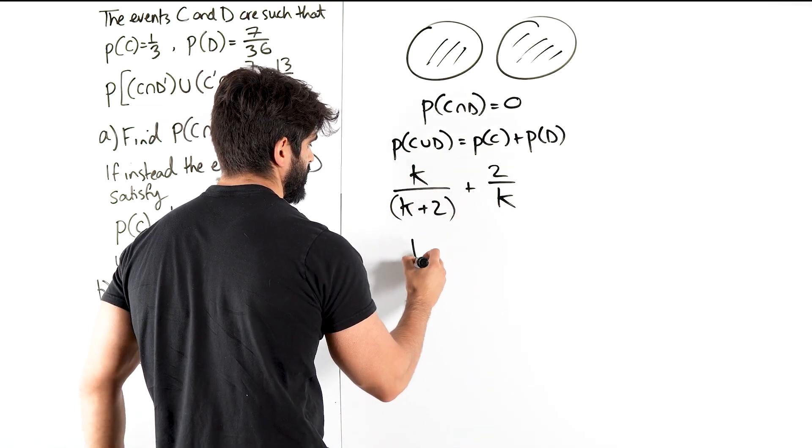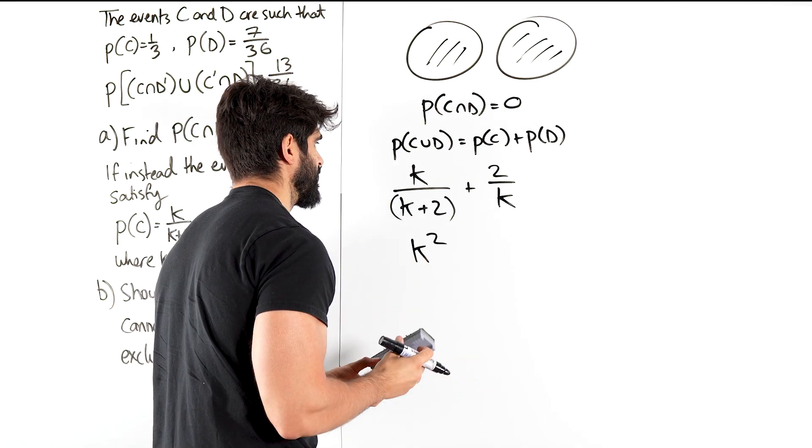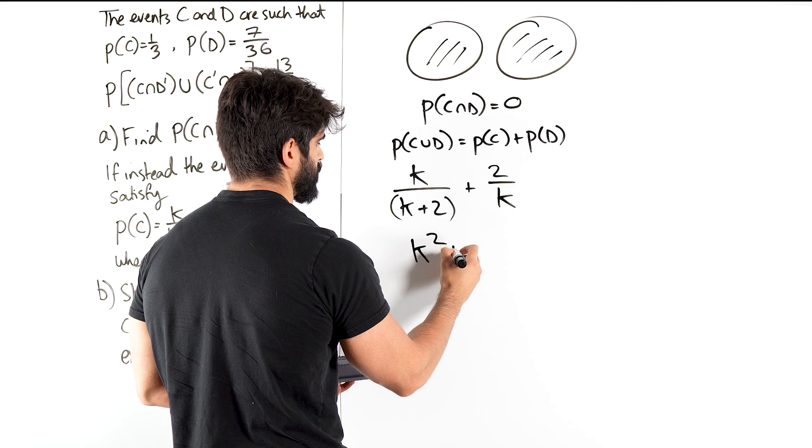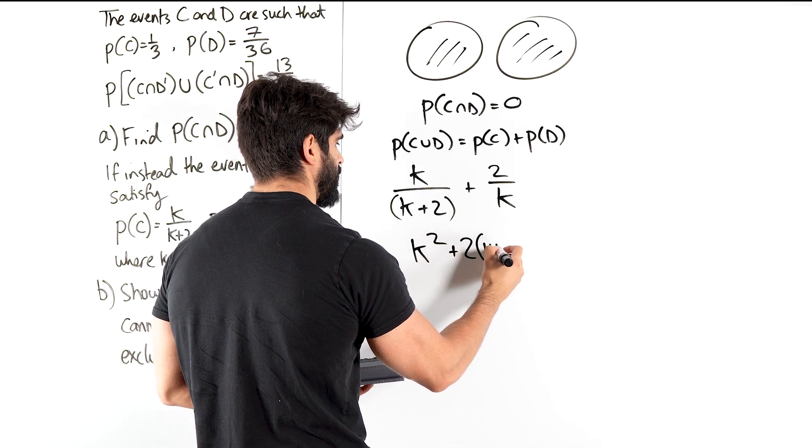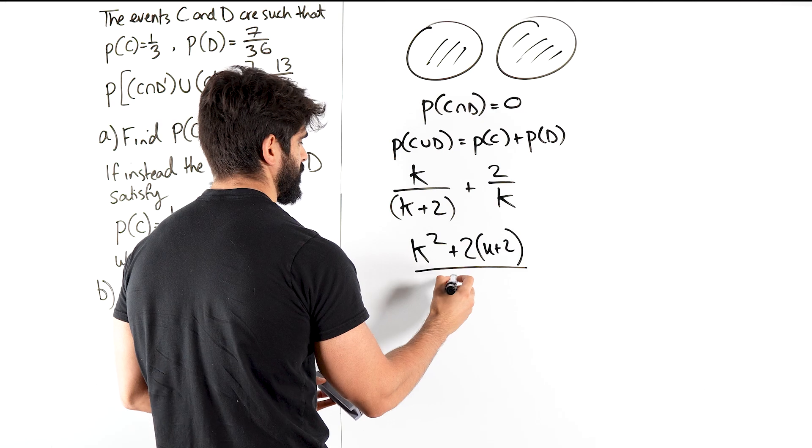So I have K squared. Wait, I said, what did I say I was going to do again? K squared plus 2 lots of K plus 2 over K lots of K plus 2.